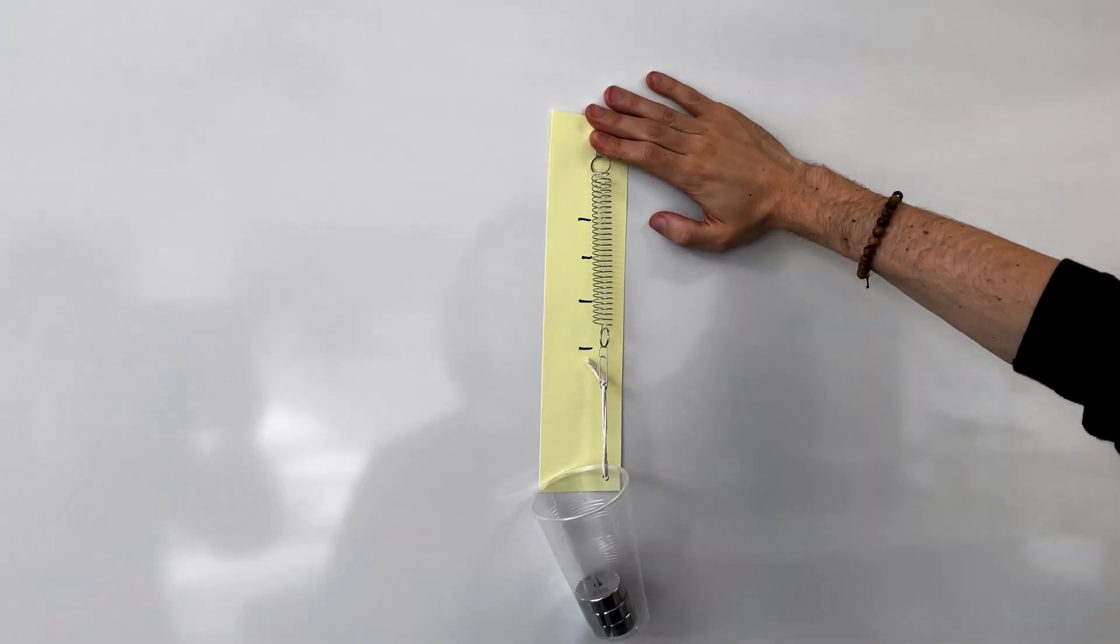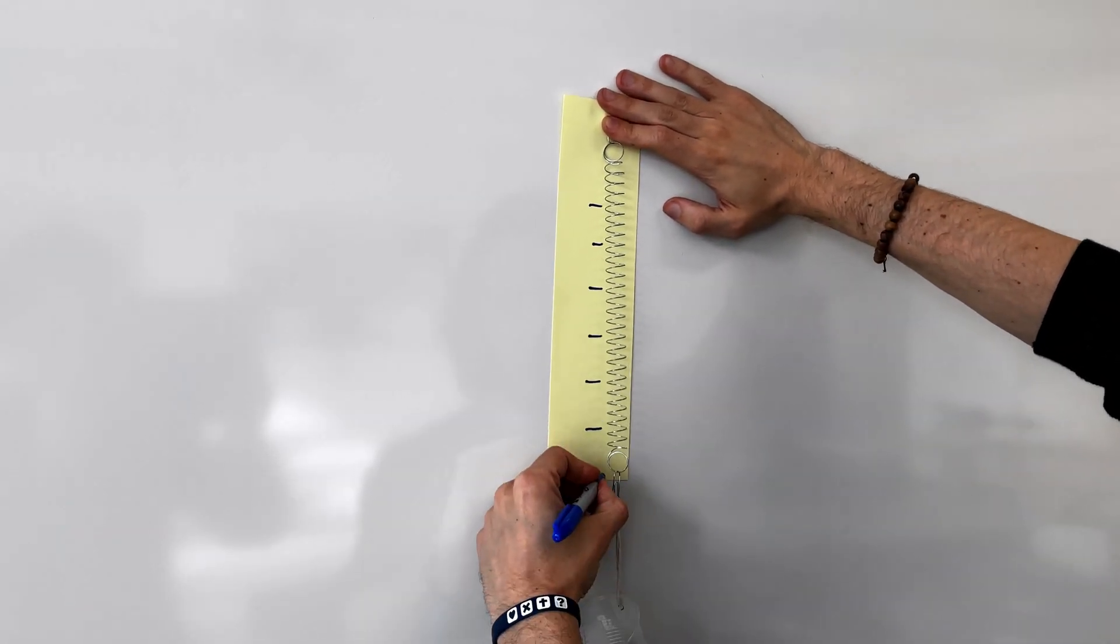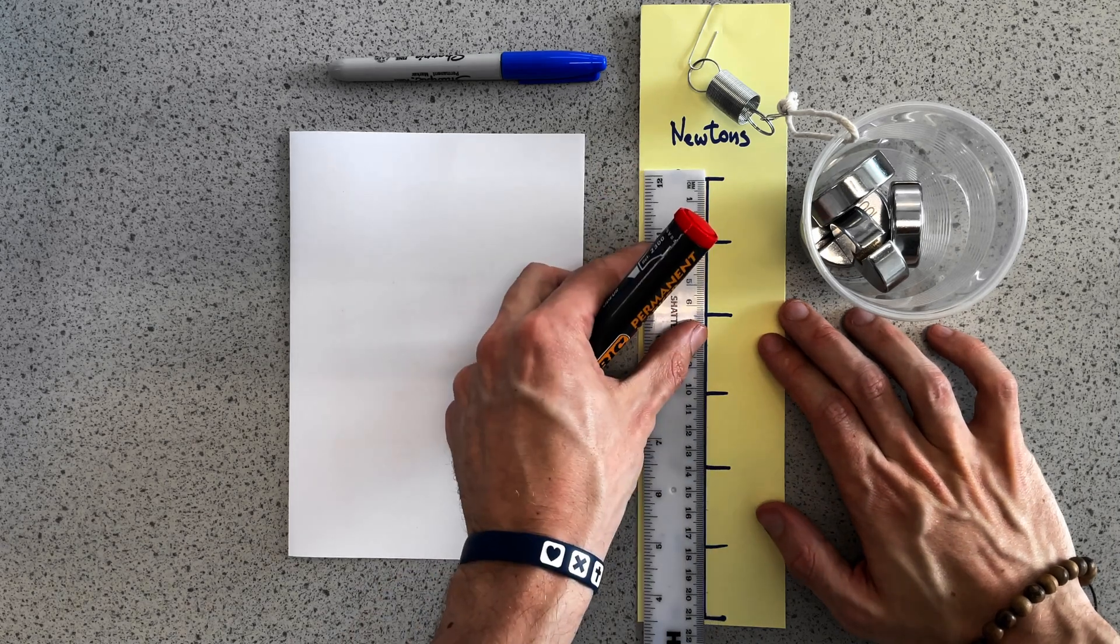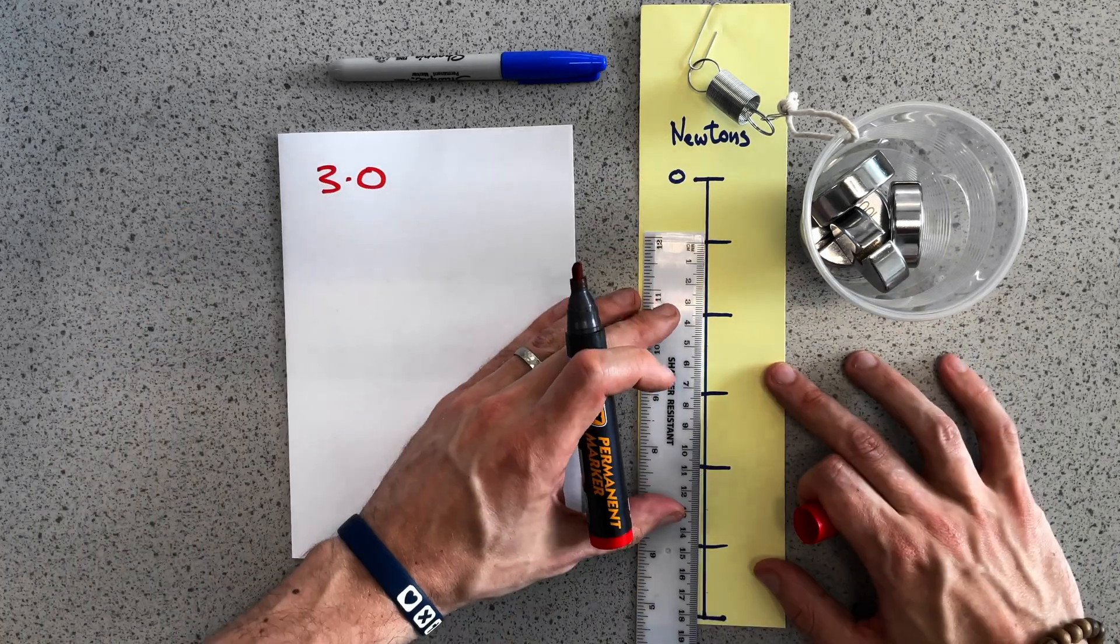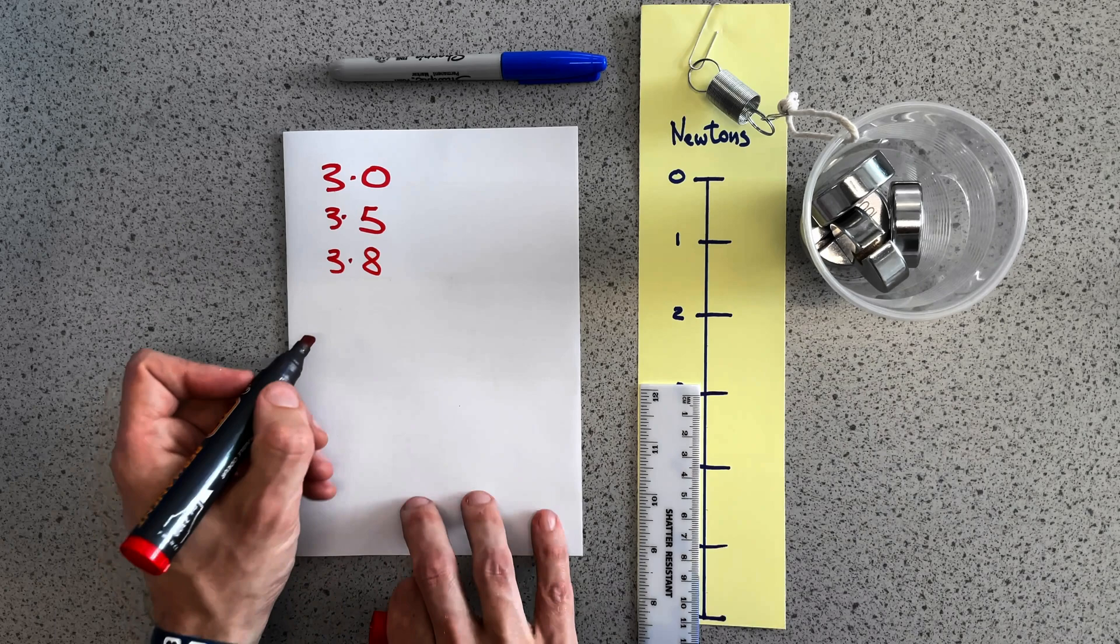Every time I add 100 grams the spring stretches exactly the same amount. However when I measure the distance between my marks they're different. This is because of human error.